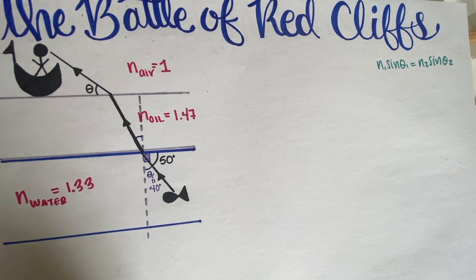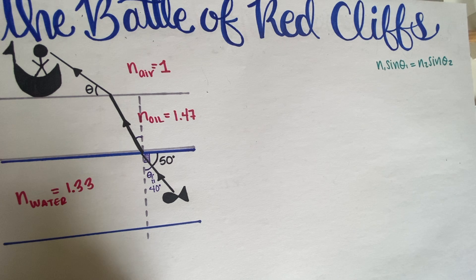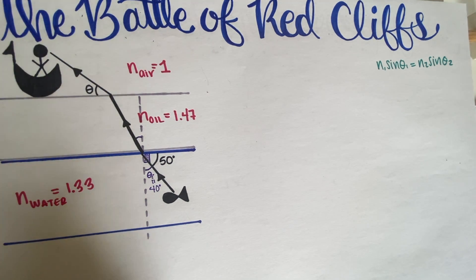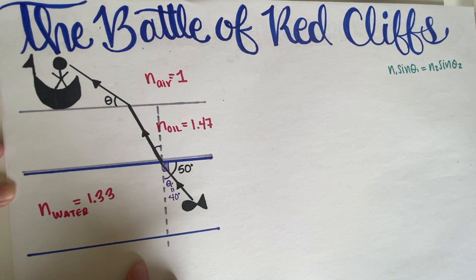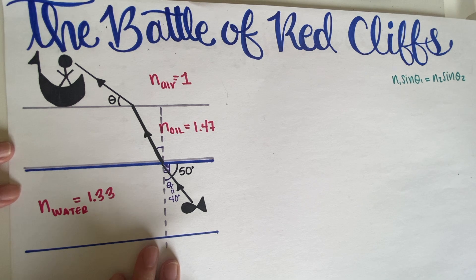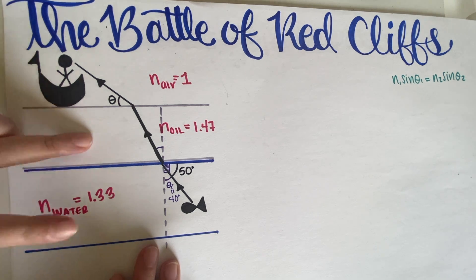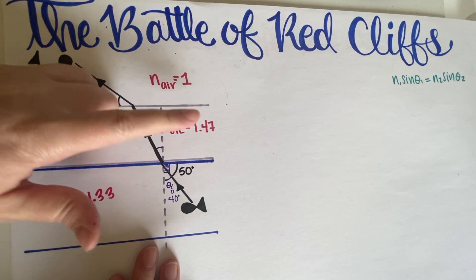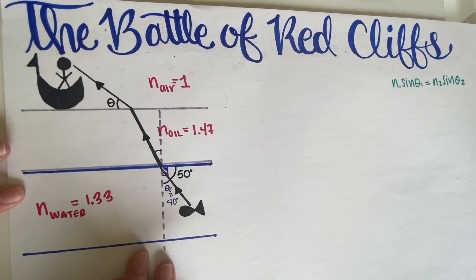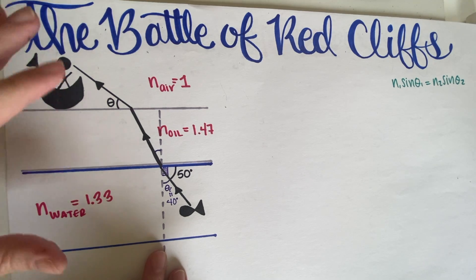One thing to address is total internal reflection — in this case we don't have to worry about it because the ray is already given to us. This is a refraction problem and nobody is asking us to draw the ray. If we were drawing it, I would check, but since we're going from a lower to higher index of refraction, and the ray is already drawn, total internal reflection is simply not relevant here.